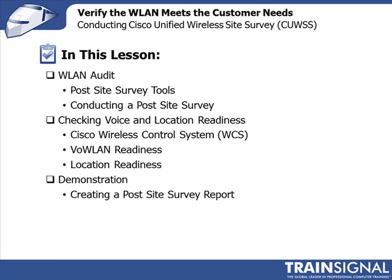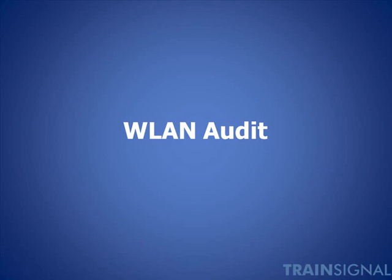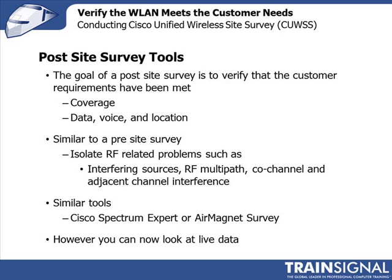We're going to wrap up with a demonstration. Rather than giving you a long list of everything to include in your final installation report to your customer, we've created a checklist you can use when doing your site surveys to check that you're including everything your customer needs as a final wrap-up on your deployment. Now, conducting a wireless LAN audit has two parts: coverage — did you meet your expected coverage requirements — and roaming — how are you transitioning between access points?